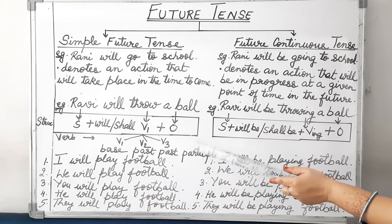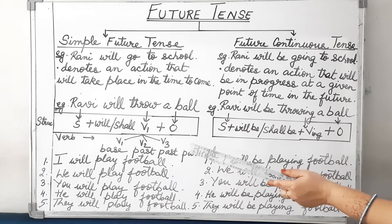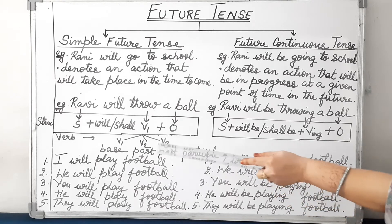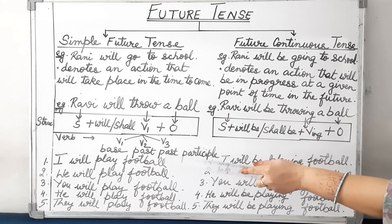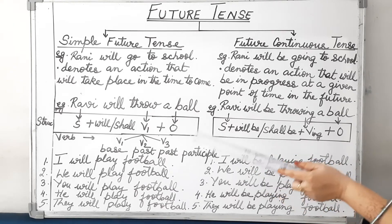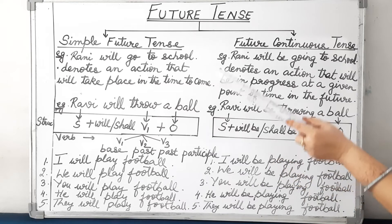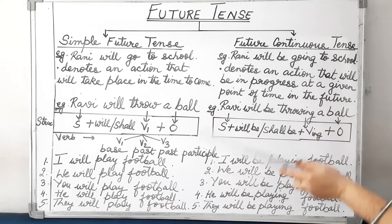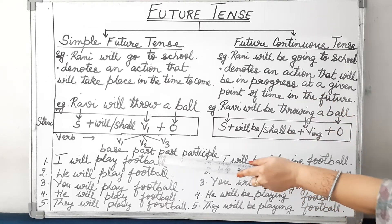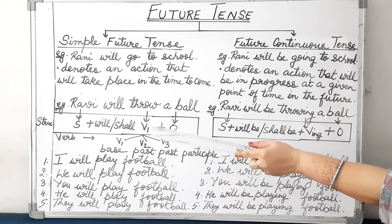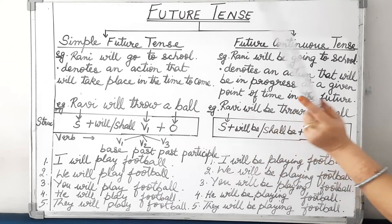In my previous videos I have already explained the three forms of the verb — the base form, past, and past participle. So whenever we are doing simple future tense, we use the base form of the verb with will or shall.